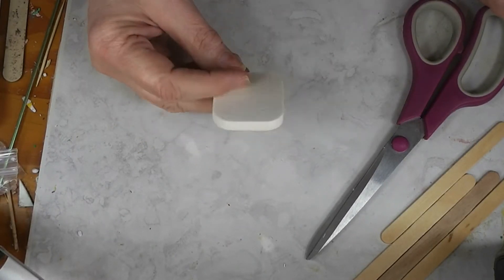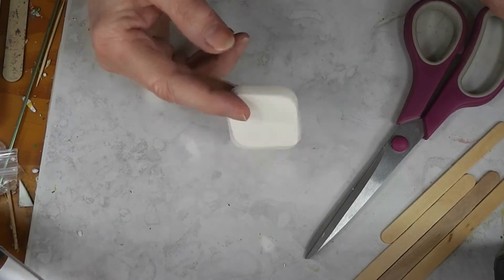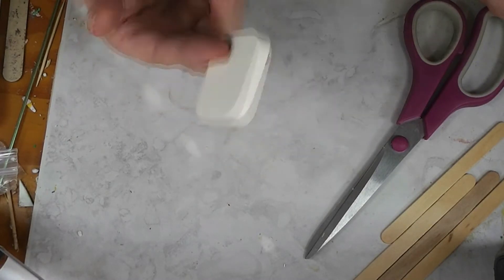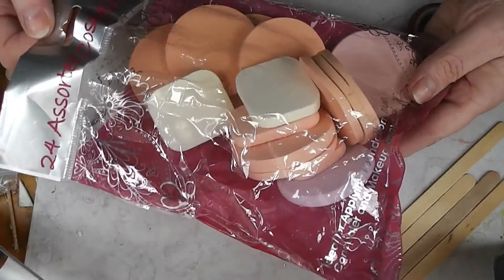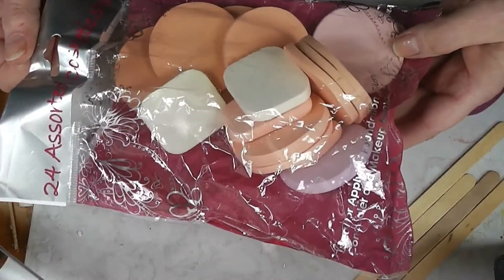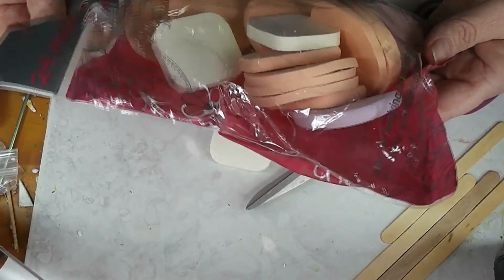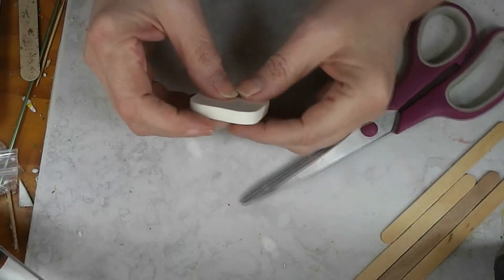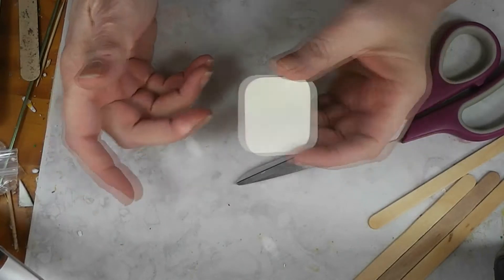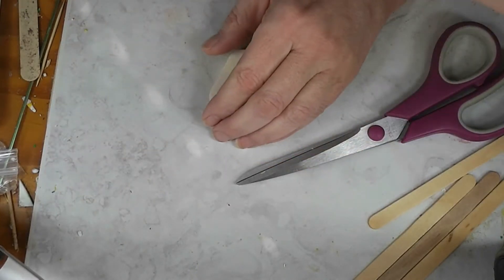This particular sponge is from this bag of 24 assorted cosmetic sponges. I think this cost me like a dollar or two. I got two or three bags of those a few years ago at Big Lots, but you can get cosmetic sponges anywhere that sells makeup.